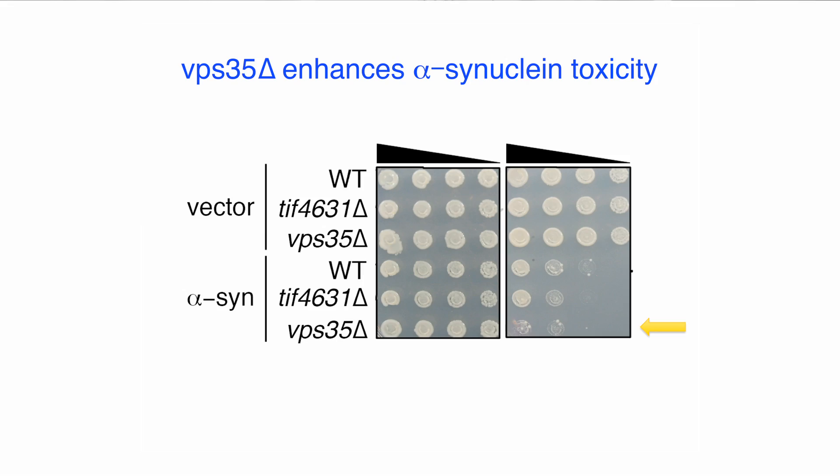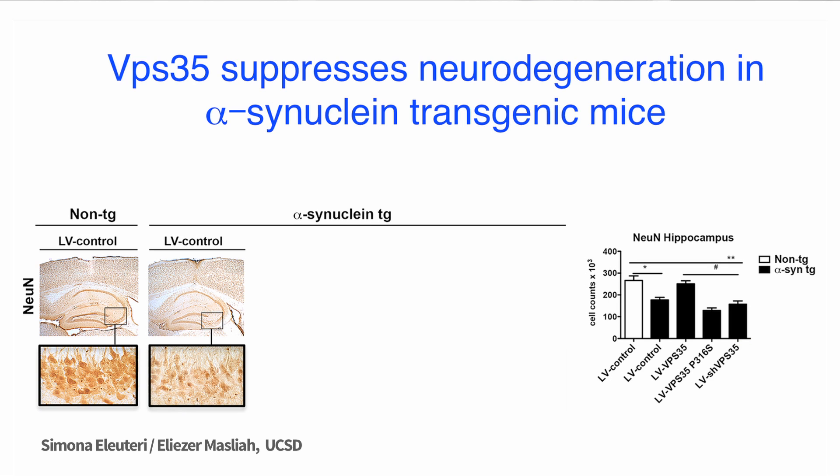Having established a connection between EIF4G1 and VPS35, I next wanted to see if either EIF4G1 or VPS35 could interact with another Parkinson's disease protein, alpha-synuclein. Returning to yeast, I expressed alpha-synuclein in yeast and found that it was more toxic in yeast cells in which VPS35 was deleted. We next tested the interaction between alpha-synuclein and VPS35 in mouse in collaboration with Dr. Eliezer Maslaya's laboratory at the University of California, San Diego. In a transgenic alpha-synuclein mouse model that their laboratory has developed, alpha-synuclein expression results in neurodegeneration.